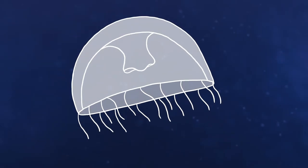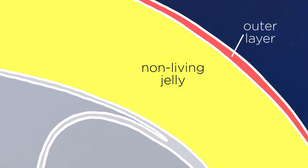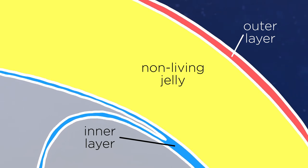Cnidarians are regarded as simple creatures because their body plan consists of just three layers: an outer tissue layer, a layer of non-living jelly, and an inner tissue layer.